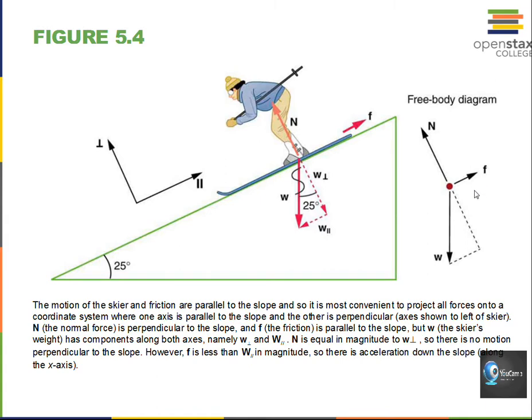Our free body diagram. Again, they could have done the component of W here. We're going to need this W parallel to the ramp. It's going to be acting up here. And there's going to be a subtraction. This W parallel to the ramp will subtract friction to get our net force. And the skier will go down the slope.